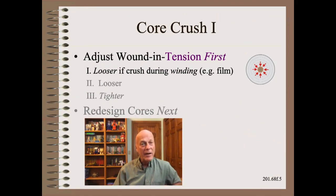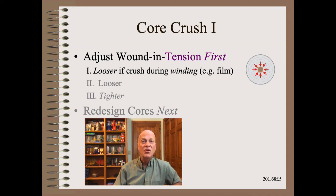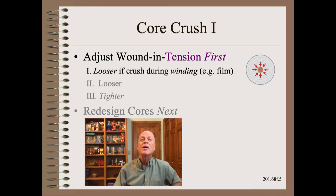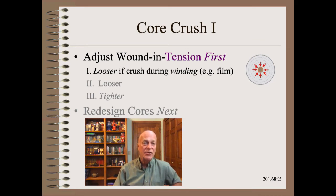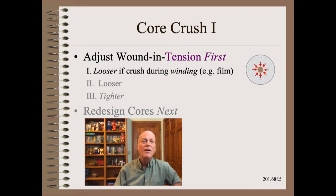If you have film or other stretchy materials, you're most likely to have a Type 1 core crush. Here, every wrap under tension translates to pressure. If that pressure exceeds the buckling strength, then the core will give way. If so, back off — reduce tightness.